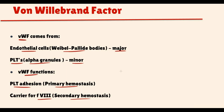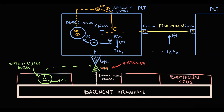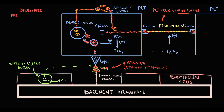Since von Willebrand factor participates in both primary and secondary hemostasis, in von Willebrand disease both types of hemostasis will be affected. In primary hemostasis, with deficiency of von Willebrand factor, platelets cannot bind to subendothelial collagen, so platelet adhesion becomes disrupted. Without adhesion, platelets cannot be activated; without activation, they cannot release ADP, and thereby cannot force transportation of GP2B3A to the platelet surface. So fibrinogen cannot bind to platelets, a platelet plug cannot be formed, and primary hemostasis becomes dysfunctional — manifesting with prolongation of bleeding time.